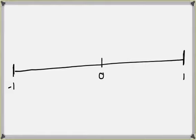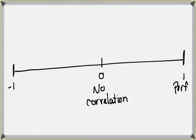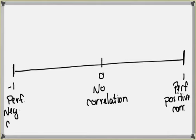If r is 0, there is no correlation between our two variables, so a straight line model would definitely not be good. As we go to our extremes — negative 1 and positive 1 — a value of positive 1 indicates a perfect positive correlation. We don't see a value of 1 very often, and the same goes for negative 1; we don't see data in the real world that gives us a perfect correlation very often. Negative 1 indicates a perfect negative correlation. Everything in between is usually what we're going to see.